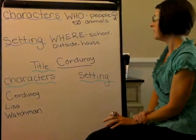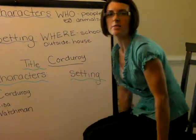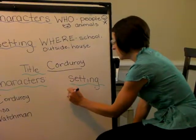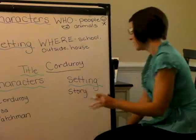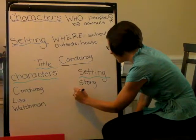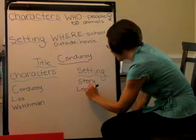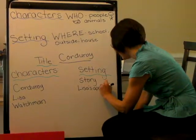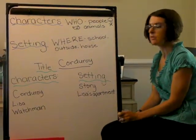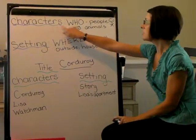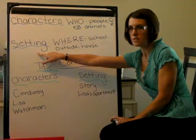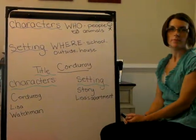Now, let's talk about the setting one more time. Remember, the setting is where the story was taking place. Can somebody raise their hand and tell me where Corduroy was during most of the story? Very good, he was in the store. And can someone tell me where Corduroy was at the end of the story? You're right. He was at Lisa's apartment, so the setting changed. Now for the rest of the year, I want you to always be thinking about, when we read stories, the characters are who the story is about, and the setting is where the story takes place. Those are very important parts of each of the stories that we'll be reading. Thank you.